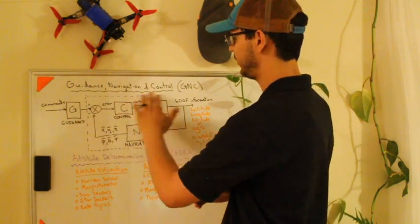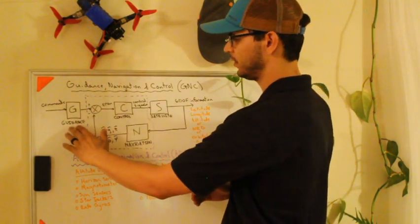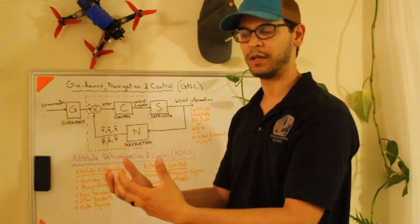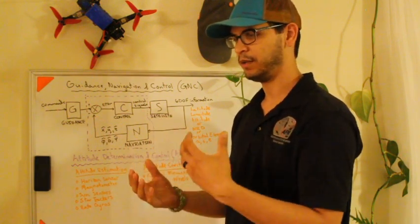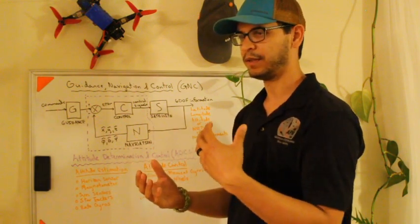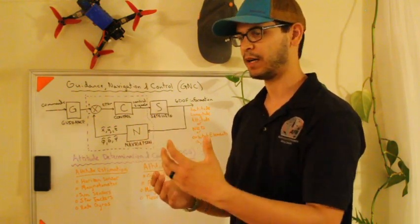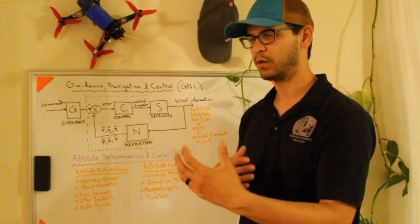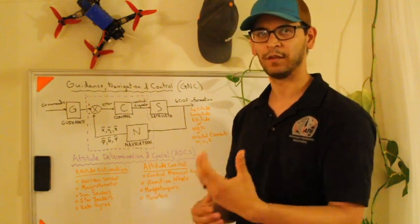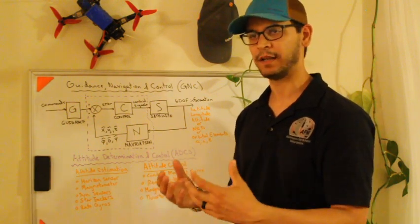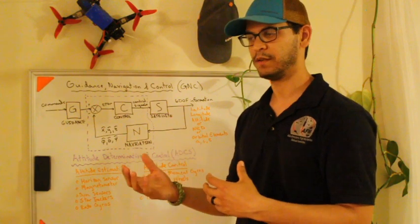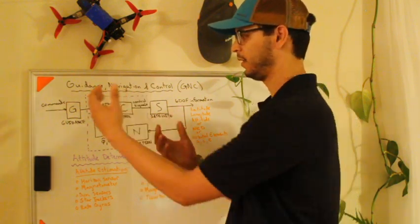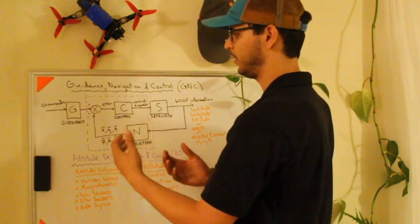The G — guidance in GNC — is basically the commands. It's where I want to go: the ascent phase of the rocket, the tumbling of the rocket, any orbital transfers or maneuvers, anything that I want to do, pointing for communication, anything like that — that comes in here to commands.